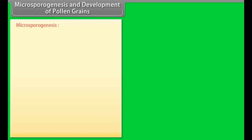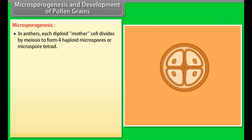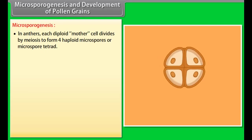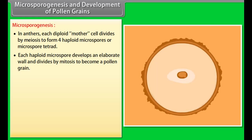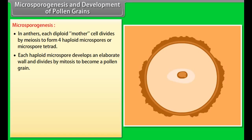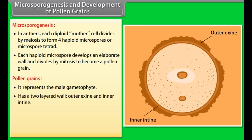Microsporogenesis and development of pollen grains. In anthers, each diploid mother cell divides by meiosis to form four haploid microspores, or a microspore tetrad. Each haploid microspore develops an elaborate wall and divides by mitosis to become a pollen grain. Pollen grains represent the male gametophyte and have a two-layered wall — outer exine and inner intine — with a prominent aperture in the exine called the germ pore.